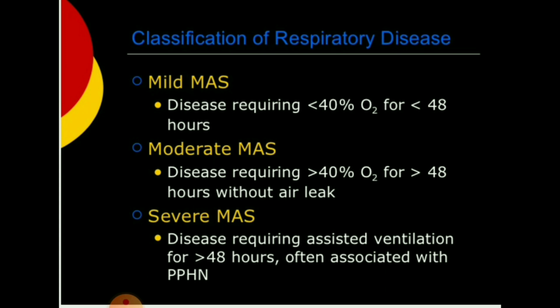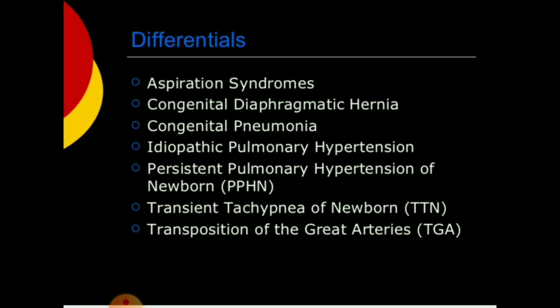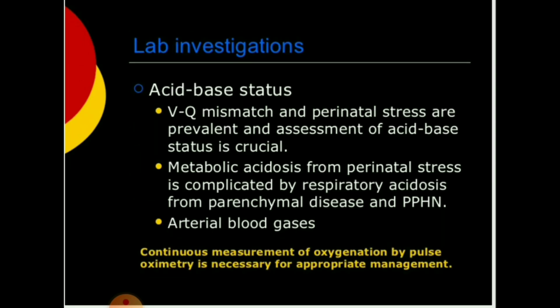Differential diagnosis of MAS includes: aspiration syndrome, congenital diaphragmatic hernia, congenital pneumonia, idiopathic pulmonary hypertension (PPHN — persistent pulmonary hypertension of the newborn), TTN (transient tachypnea of the newborn), and TGA (transposition of the great arteries).